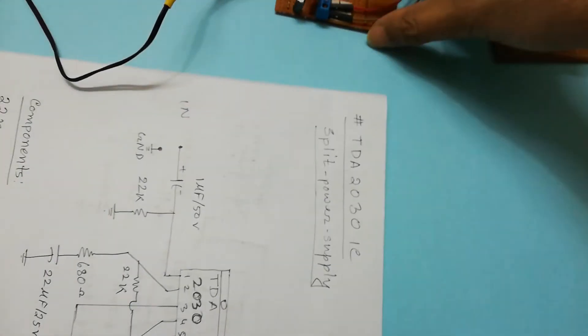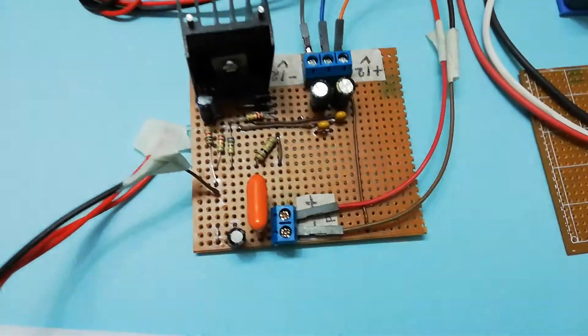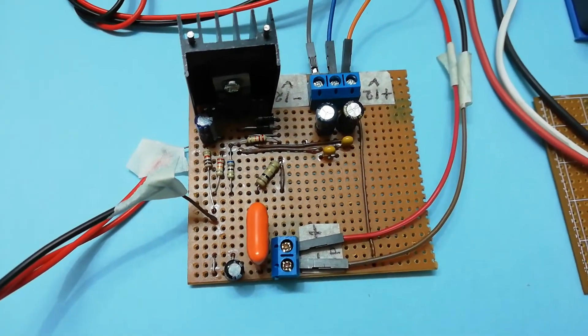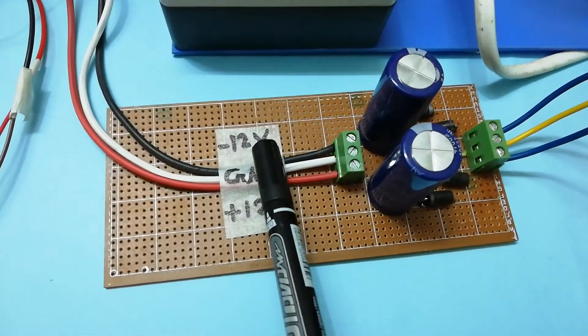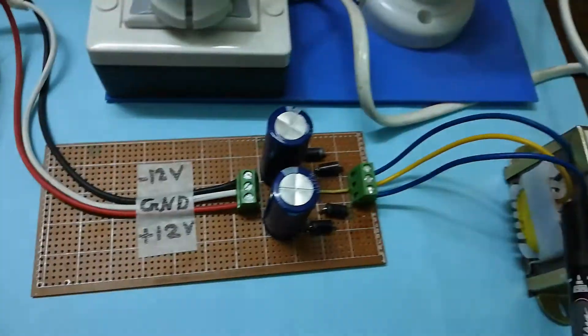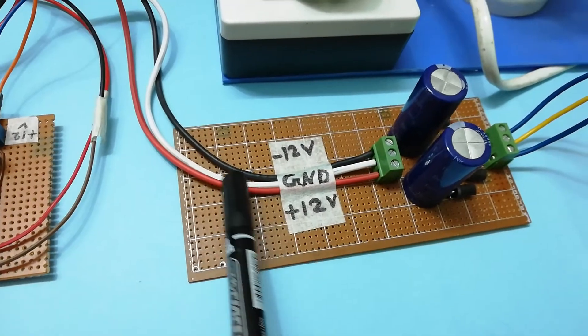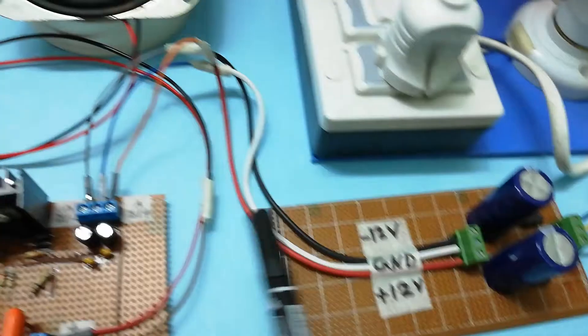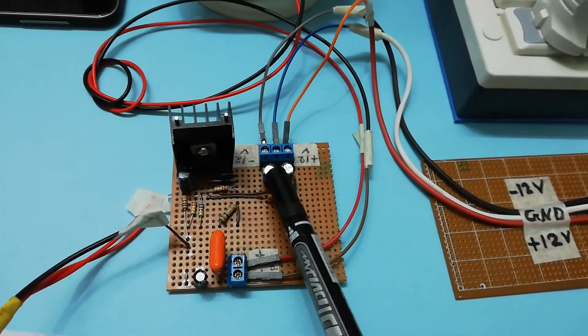And now if I go to the circuit which I constructed in VeroBoard, this is the circuit. So this is a split mode power supply. And here I can show you this is minus 12 volt, this is ground, and this is plus 12 volt. And the power is coming from 12 volt 3 ampere transformer. And from this circuit, I am getting three terminals plus 12, ground, minus 12, and I am giving connection to my amplifier circuit.